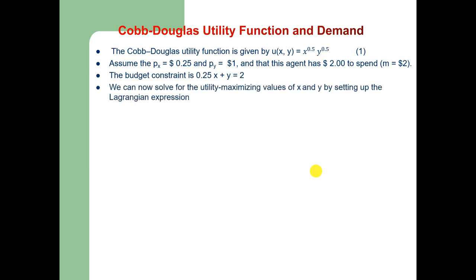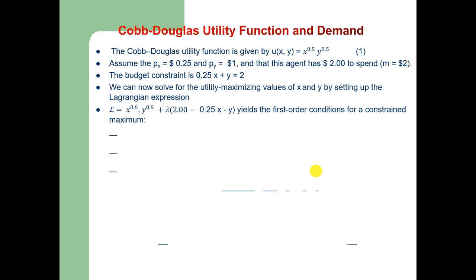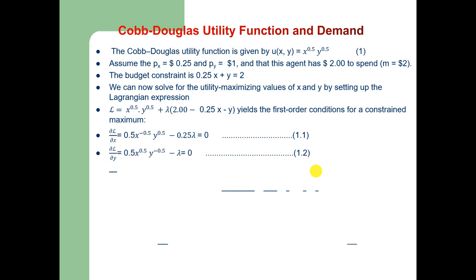In order to solve for the utility maximizing values of x and y, we set up the Lagrangian expression: L = x^0.5 * y^0.5 + λ(2 - 0.25x - y). This yields the first order conditions for a constrained maximum. Equation 1 is the partial derivative of L with respect to x, equation 2 with respect to y, and equation 3 with respect to λ.